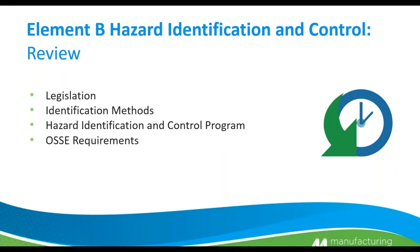Just a review of what we did three weeks ago — this is an element review for Element B, which is Hazard Identification and Control. We talked about the legislation, identification methods, the Hazard Identification and Control program, and the OCIE requirements. You are going to see that a lot of what we discussed in that presentation is going to make its way into almost all of the upcoming webinars and elements required for our occupational health and safety management system.